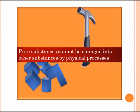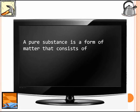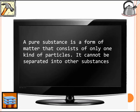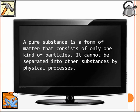We can now define a pure substance. A pure substance is a form of matter that consists of only one kind of particles. It cannot be separated into other substances by physical processes. So we've summed up both these points in this definition.